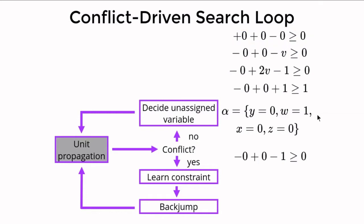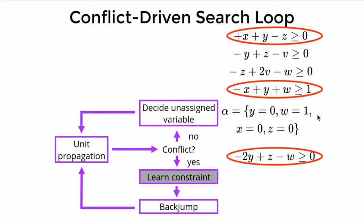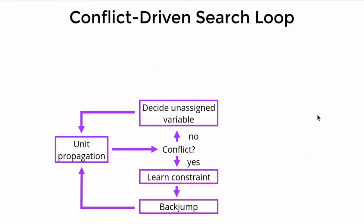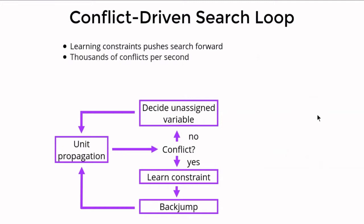We extend alpha and simplify the constraints, and now we reach a new conflict — the learned constraint is impossible to satisfy. We learn another constraint: this time we add the three propagating constraints together to learn a trivial inconsistency. As this inconsistency is implied by the input problem, we conclude no solution existed. Conflict-driven search ends and reports the problem was unsatisfiable. The key property is that it learns constraints from conflicts — these learned constraints push the search forward, with thousands of conflicts per second in practice.